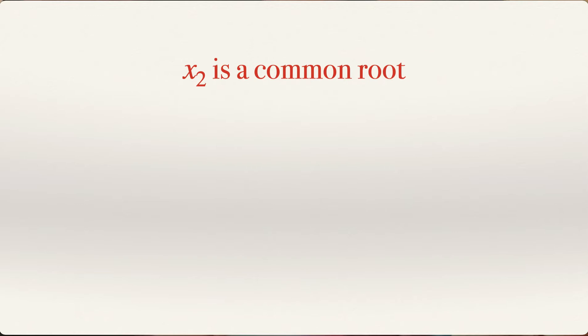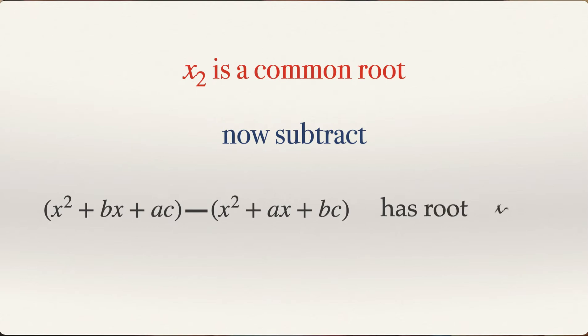So in the light of the discussion that we just had, you immediately notice that x2 is a common root of both of these equations. And we will use this fact that x2 is a common root. We will simply subtract the two equations. So what do we get? x squared plus bx plus ac minus x squared plus ax plus bc equal to zero. So this particular equation or expression has root x2.